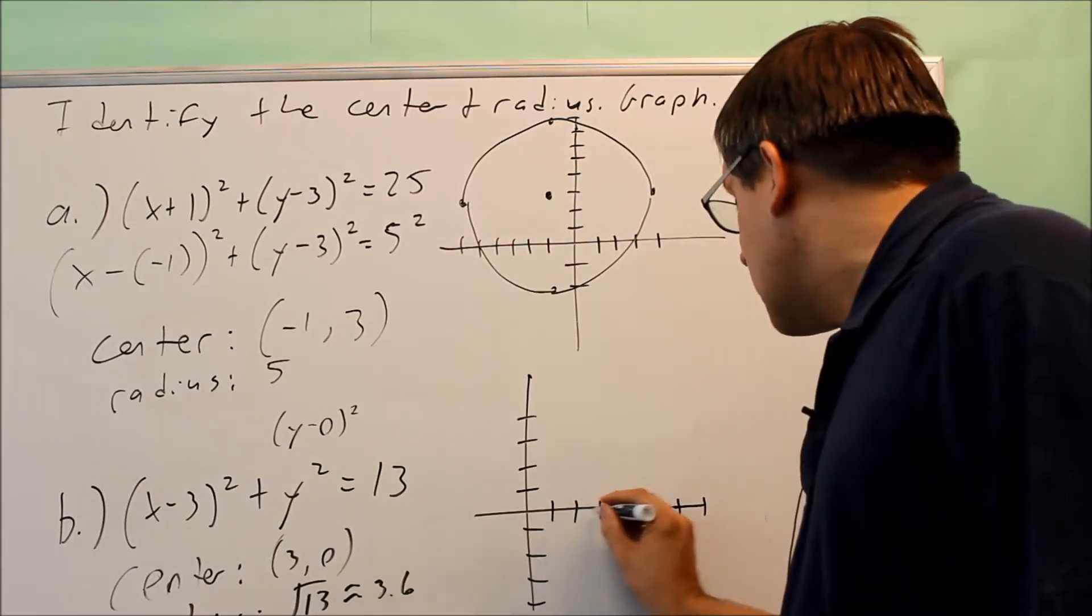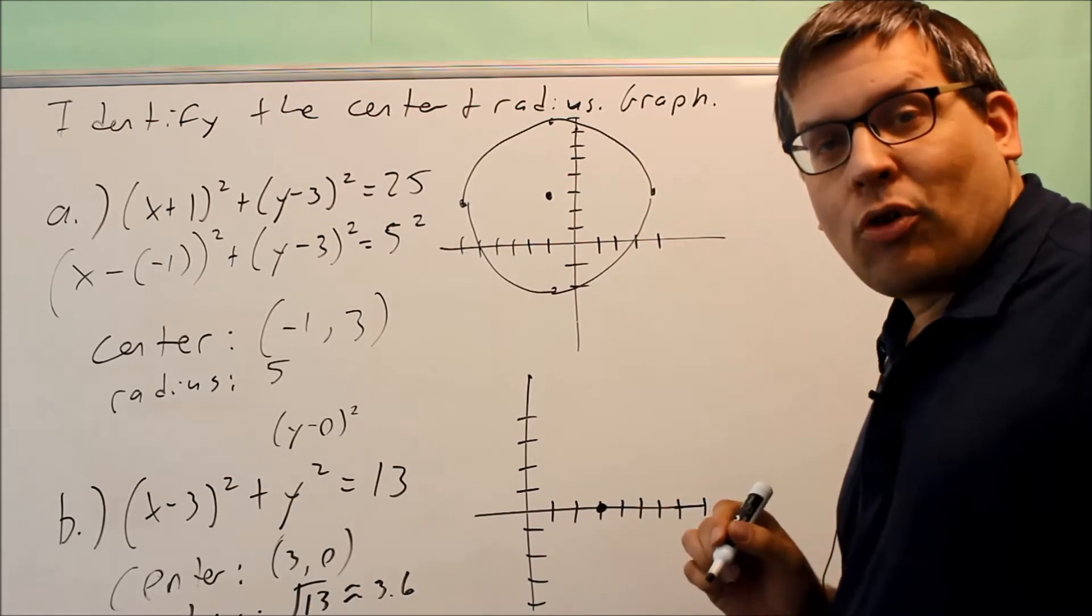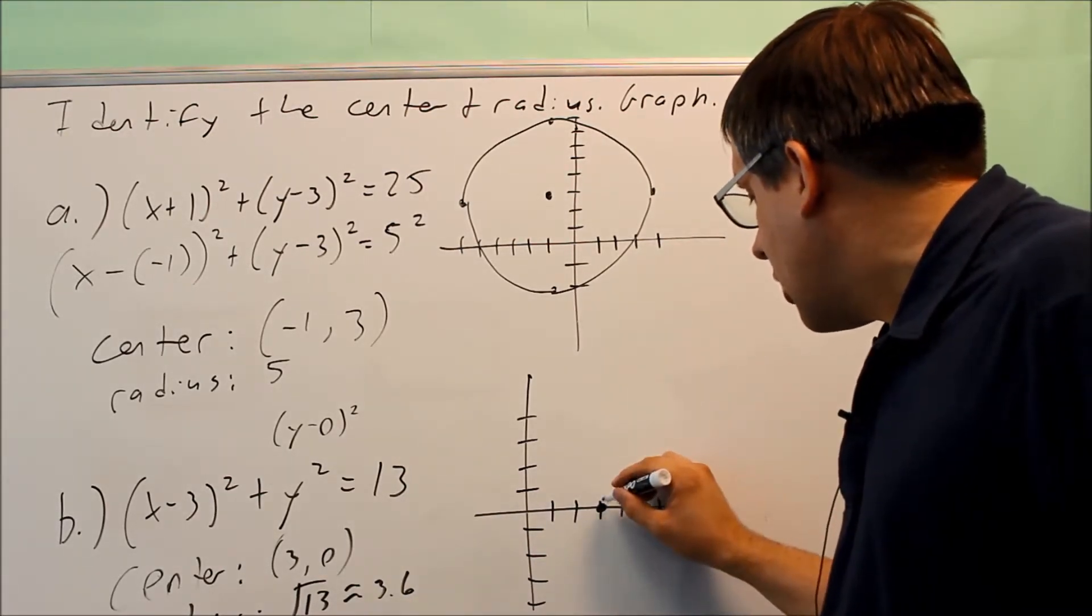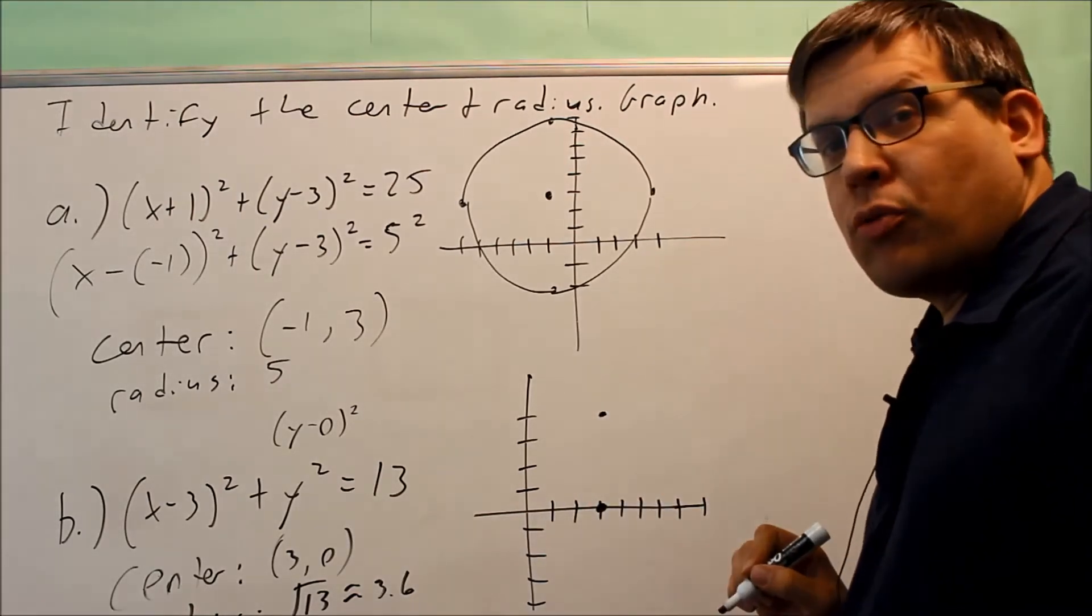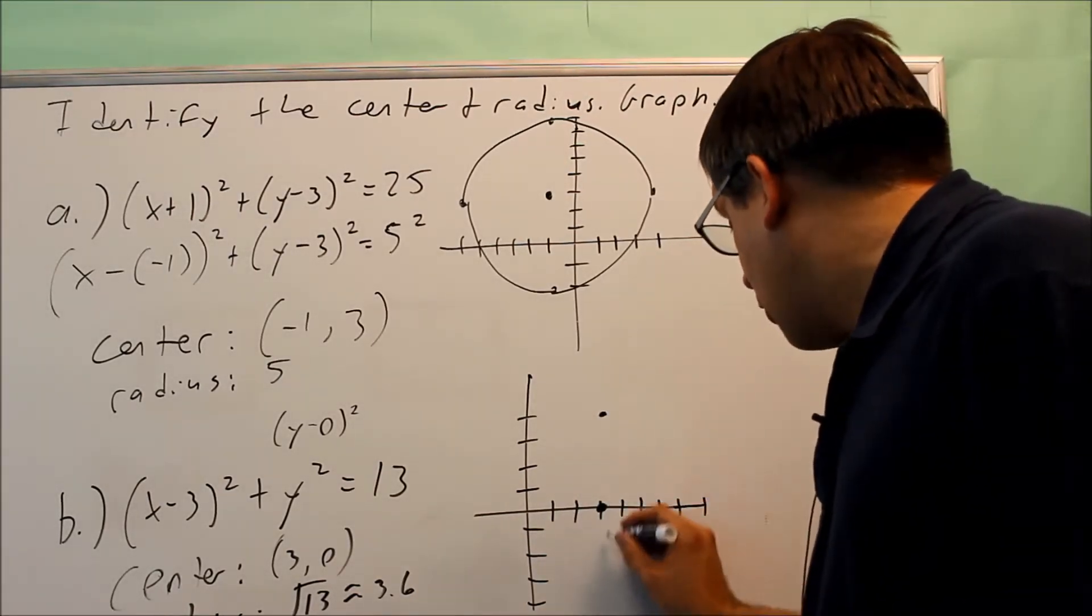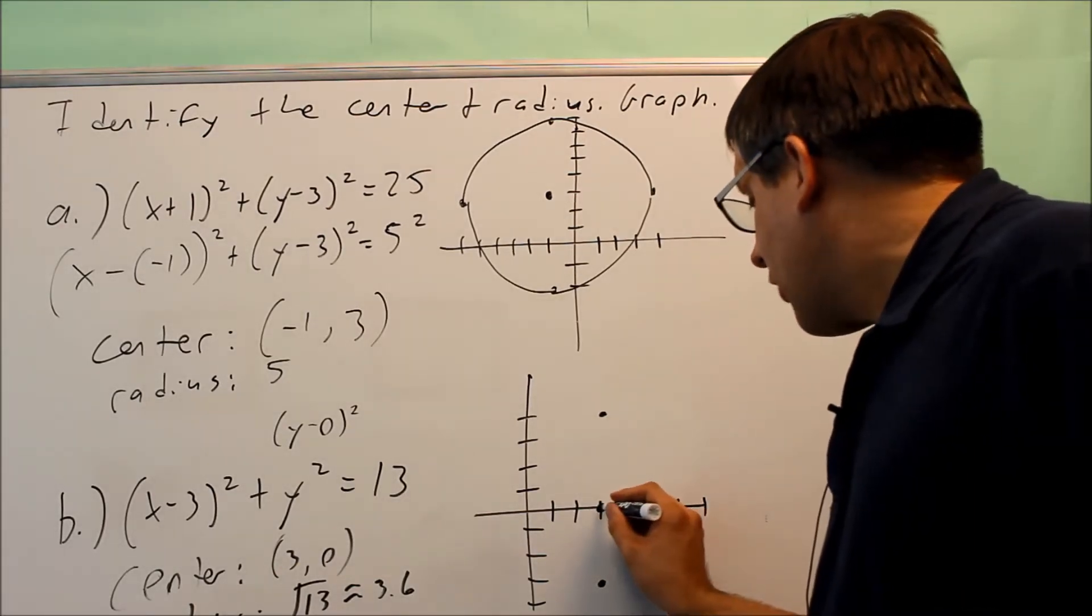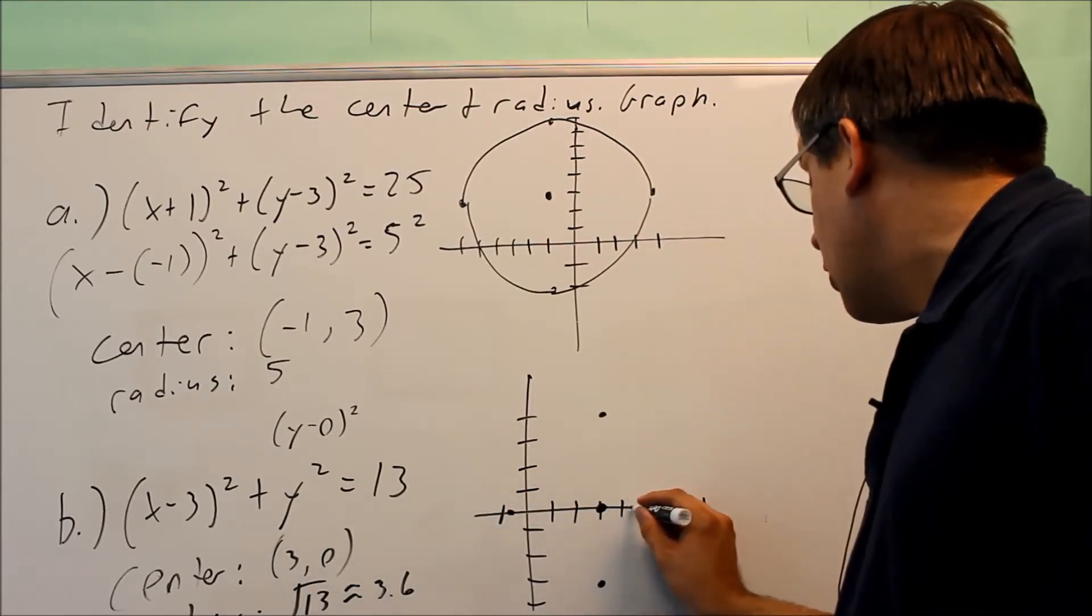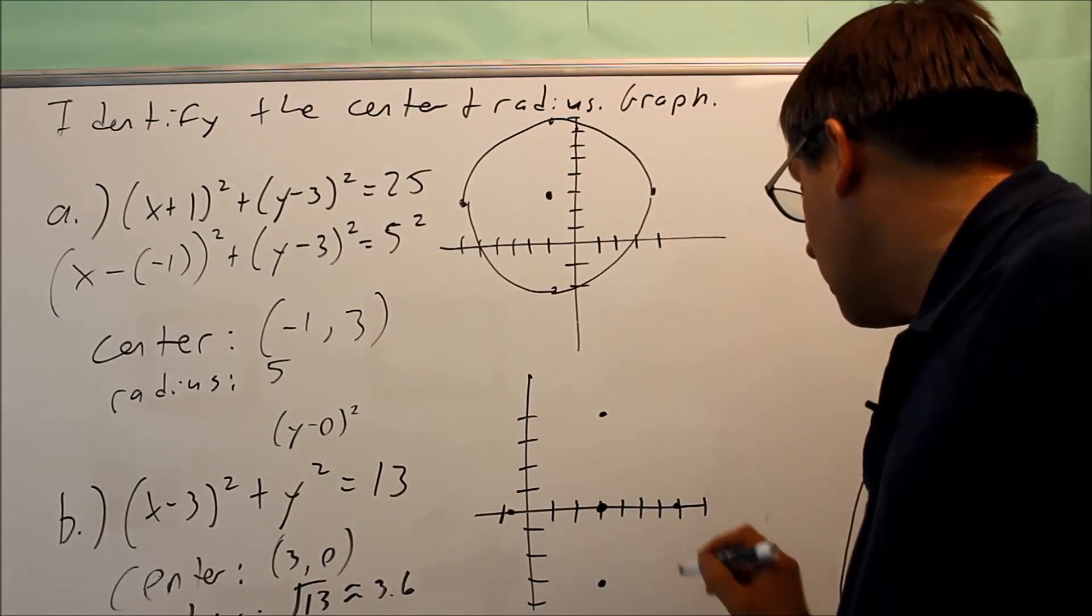Center is 3, 0. 3, 0 is right here. Radius is 3.6, so I'm going to go up 3.6 and down 3.6. So I'm going to estimate this, it's about right there would be 3.6 above. If I go 3.6 down below, it's about right there. To the left 3.6, so probably about right here, and to the right 3.6, so 1, 2, 3, and a little bit more, that's going to be there.